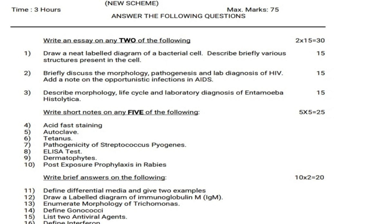Fifth question: Autoclave. Sixth question: Tetanus. Seventh question: Pathogenicity of Streptococcus pyogenes. Eighth question: ELISA test. Ninth question: Dermatophytes. Tenth question: Post-exposure prophylaxis in rabies.